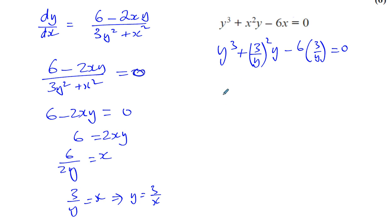It should be fine whichever way we do it. So you have y cubed plus (9 over y squared) times y minus 18 over y equals 0.